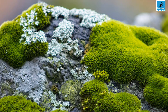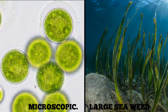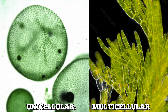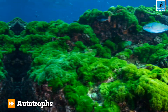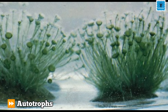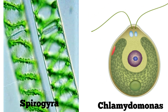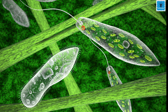You must have seen green patches on a moist surface — that is algae. Algae are simple plants that can range from microscopic to large seaweed. These are unicellular or multicellular organisms, green in color, and they make their own food by the process of photosynthesis, meaning they are autotrophic in nature. Spirogyra and Chlamydomonas are a few examples of algae.